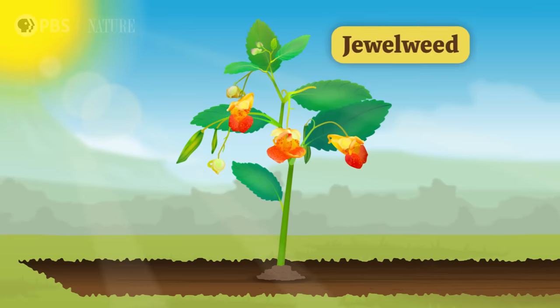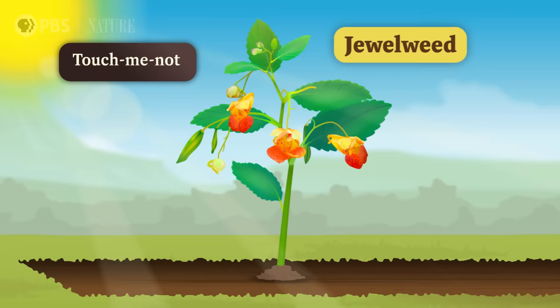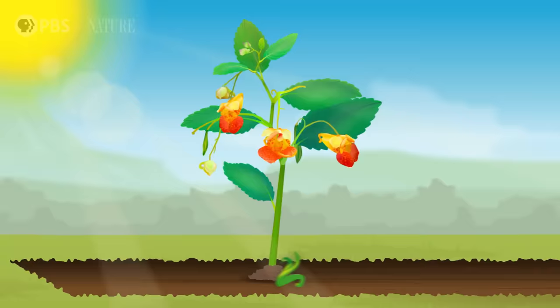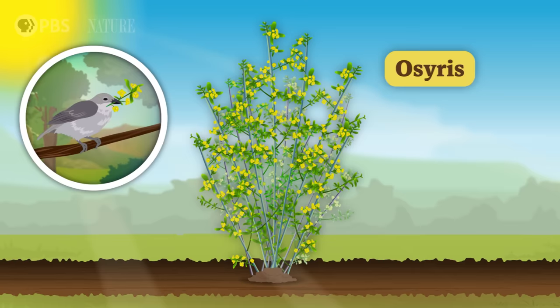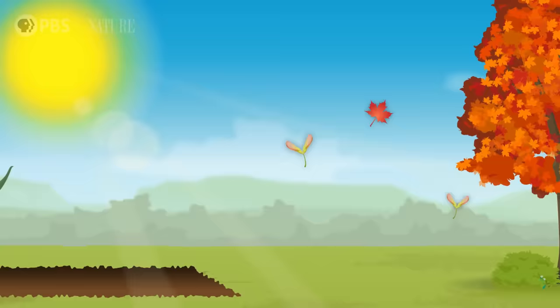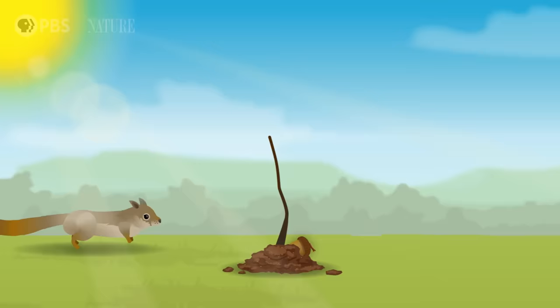There's this plant called jewelweed, also known as touch-me-not. When you touch its seed pods, they have a habit of exploding — the seed pods fling the seeds into the air to spread them far and wide. The seeds of the osiris plant develop faster if they've been roughed up inside a bird's digestive system. Foxtail seeds hitch a ride on animals' fur. Maple tree fruits surf on the wind. Oak tree fruits, or acorns, sprout where squirrels bury them. Are you sensing a pattern here?